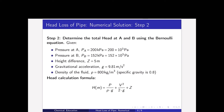Next, determine the total head at A and B using Bernoulli's equation. We know the pressure at point A and point B, which we convert to Pascals or Newtons per square meter. Pressure at A is 200 kilopascal = 200,000 N/m². Gravitational acceleration is 9.81 m/s². The density of the fluid is found from the specific gravity: 0.8 × 1000 = 800 kg/m³.